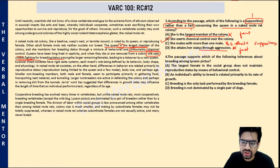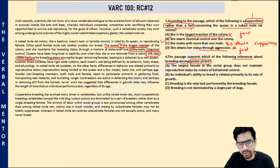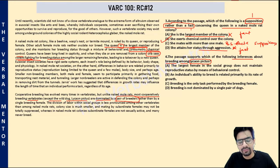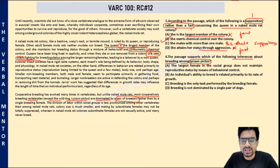Question four: the passage supports which of the following inferences about breeding among Lycaon pictus? It was written that most cooperatively breeding vertebrates — except Lycaon pictus — are dominated by a pair of breeders, which means Lycaon pictus is not dominated by a pair of breeders. It is probably dominated by a single breeding female.